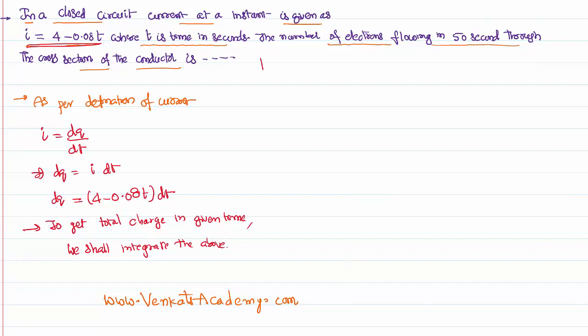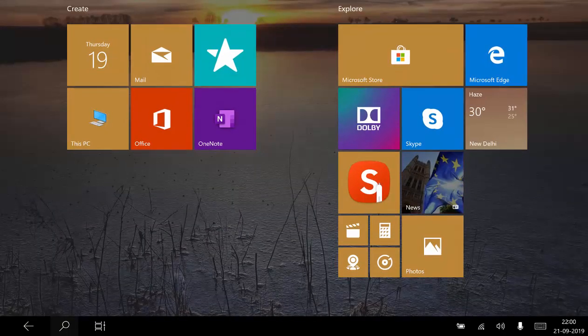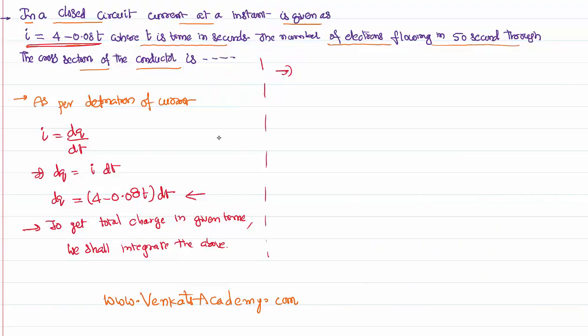That implies integrating this equation. Integral of dq is equal to integral of (4 - 0.08t) dt, where the time is varying from 0 to 50 seconds because we want it in 50 seconds.